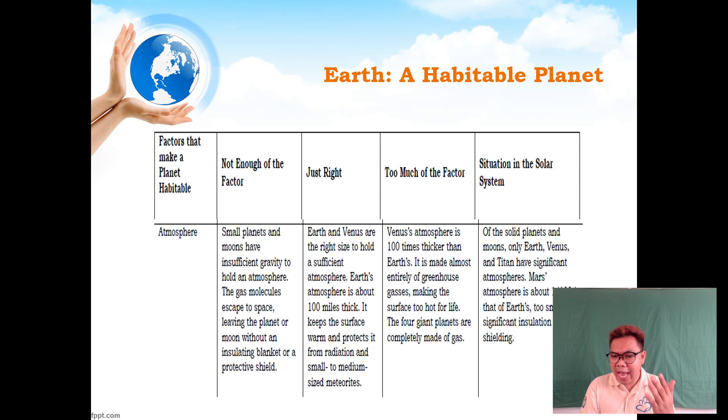If the atmosphere is just right, like for Earth and Venus, they are the right size to hold sufficient atmosphere. Earth's atmosphere is about 100 miles thick. It keeps the surface warm and protects it from radiation and small to medium-size meteorites. This atmosphere serves as our shield and barrier against external heavenly bodies like comets and asteroids. Venus has an atmosphere 100 times thicker than Earth's.